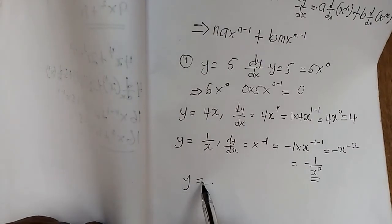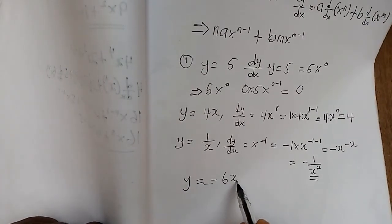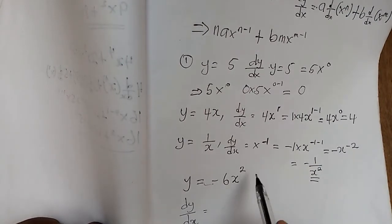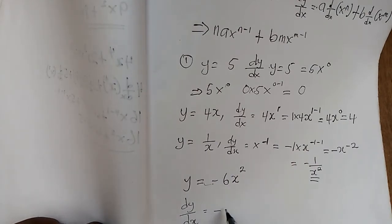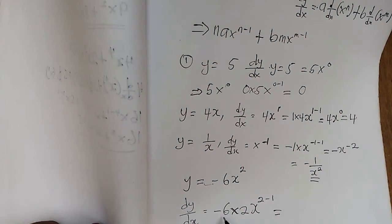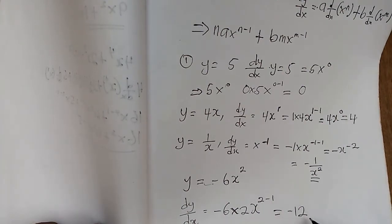The next question: y = -6x². Find dy/dx. The exponent 2 falls back and multiplies the constant -6, giving -6 times 2, and we write x^(2-1). So -6 times 2 = -12, and 2 minus 1 = 1, giving us dy/dx = -12x.